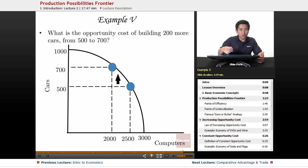Example number five. Let's move along seeing the progression here. From zero to five hundred computers, or zero to five hundred cars, the opportunity cost was actually 500 computers. What is the opportunity cost now if you're going to go from 500 to 700 cars?